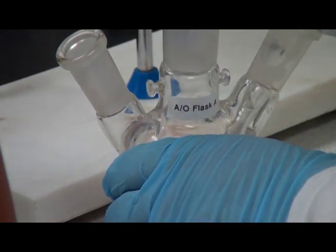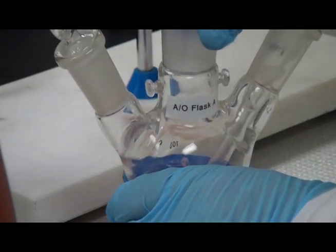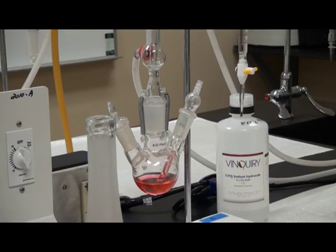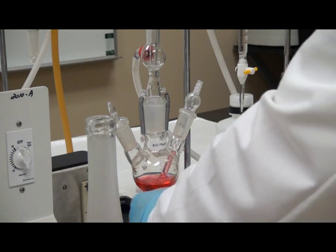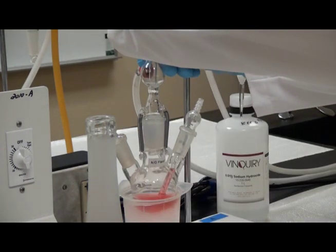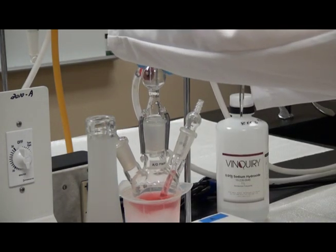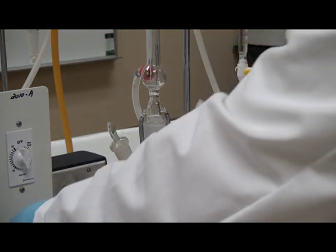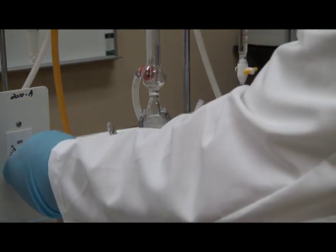Insert the bubbler and stopper into the flask. Connect the flask to the AO apparatus. Turn on the vacuum pump and set the timer to 10 minutes. Aspirate for 10 minutes at a 1 liter per minute flow rate. The dial timer will turn off the vacuum after 10 minutes.